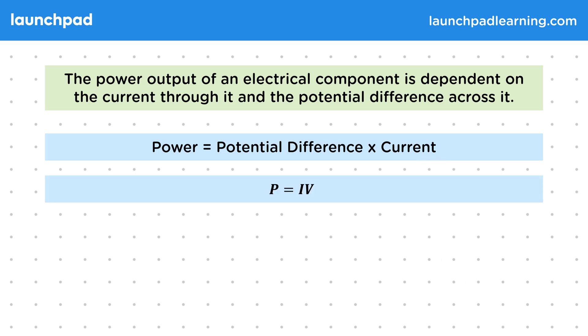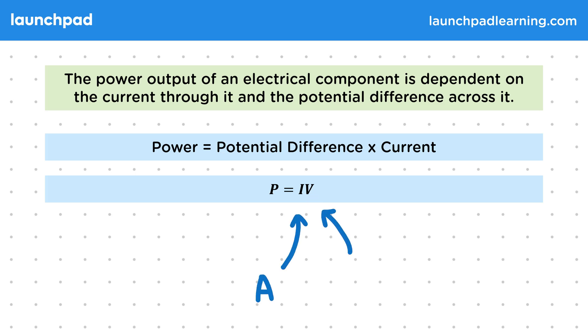In symbol form that is P equals I times V. The current is measured in amps, the potential difference is measured in volts, and the power is measured in watts.